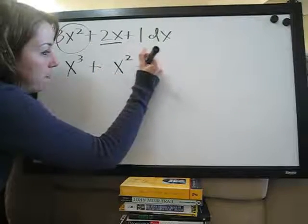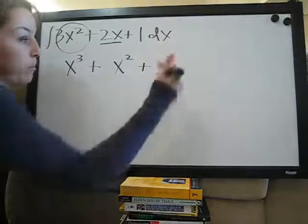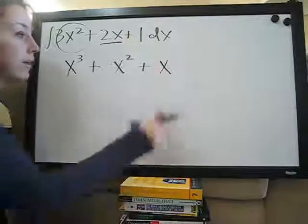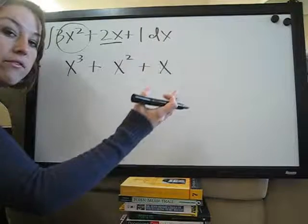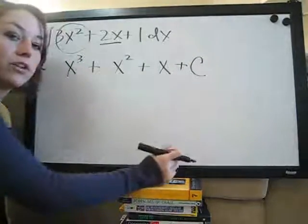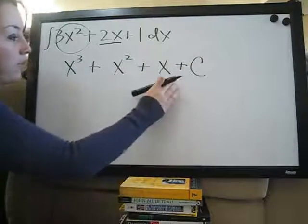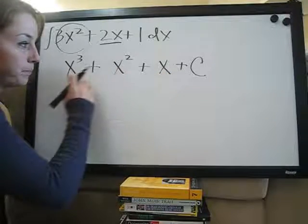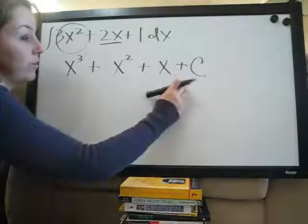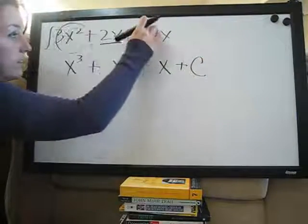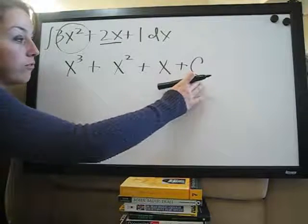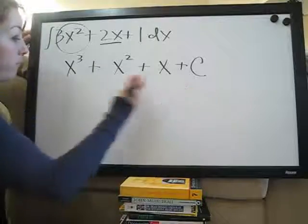The antiderivative of 1 is always just x, because the derivative of x is of course 1. Whenever we're taking the antiderivative or integral of something, we always have to put plus C, which stands for a constant — because the original function could have had any constant that would disappear when taking the derivative. You never know if there was a constant, so you always have to add C to cover that.